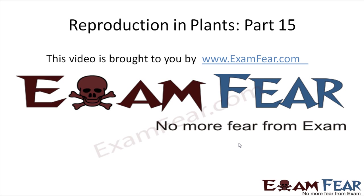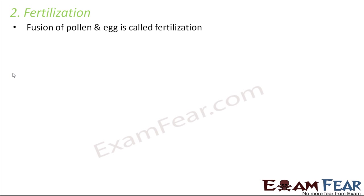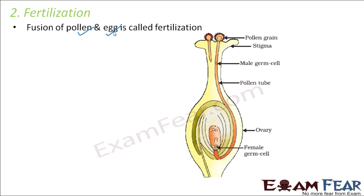This video on reproduction in plants part 15 is brought to you by ExamFear.com. After pollination, the next step in the process of sexual reproduction is fertilization — the most important step where the actual fusion between the male and female gametes takes place. It is the fusion of pollen and egg, where egg is the ovum, the female gamete. This fusion of male and female gametes is called fertilization.